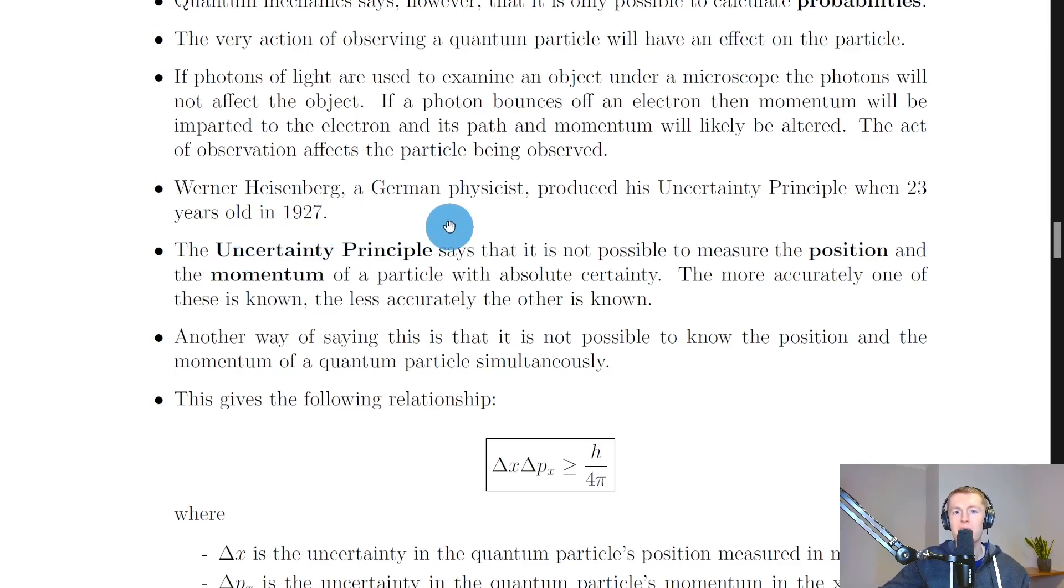It then goes on to say that Werner Heisenberg, a German physicist, produced his uncertainty principle when 23 years old in 1927.